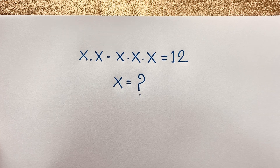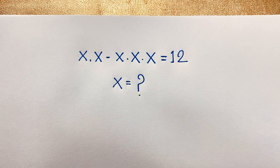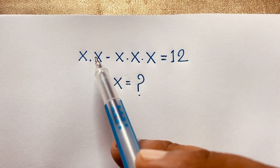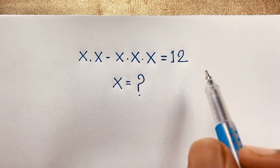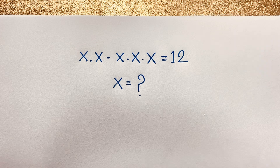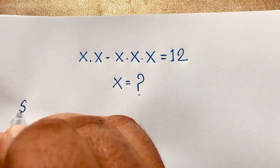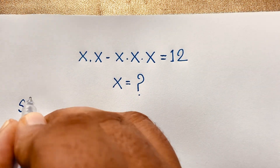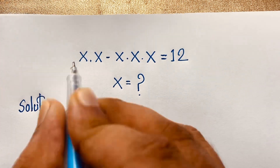Hello everyone, welcome to my YouTube channel. Today we are solving an interesting exponential math problem. The question is x times x minus x times x times x is equal to 12. We need to find out the value of x in this math problem and how to solve it.